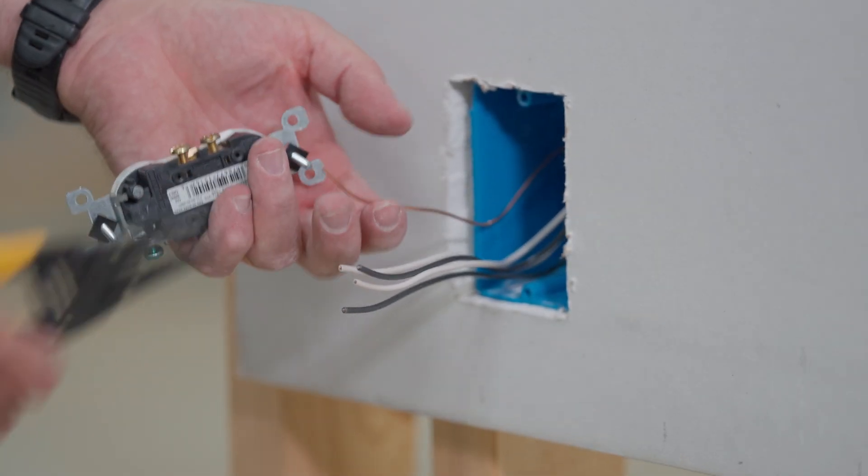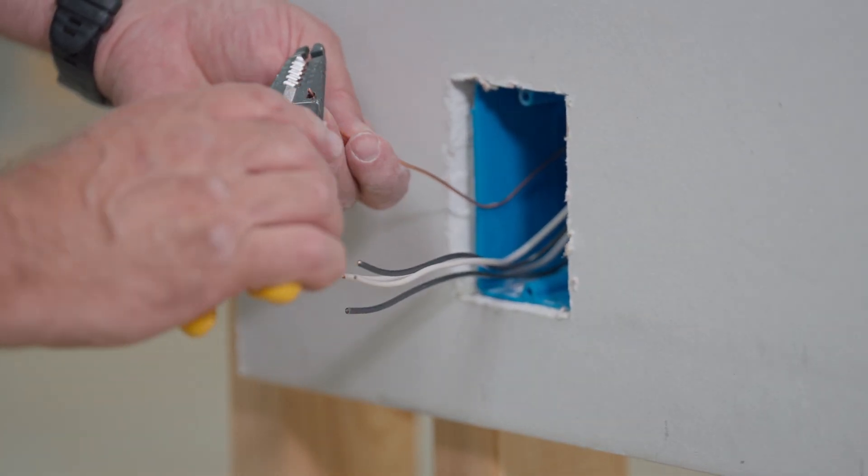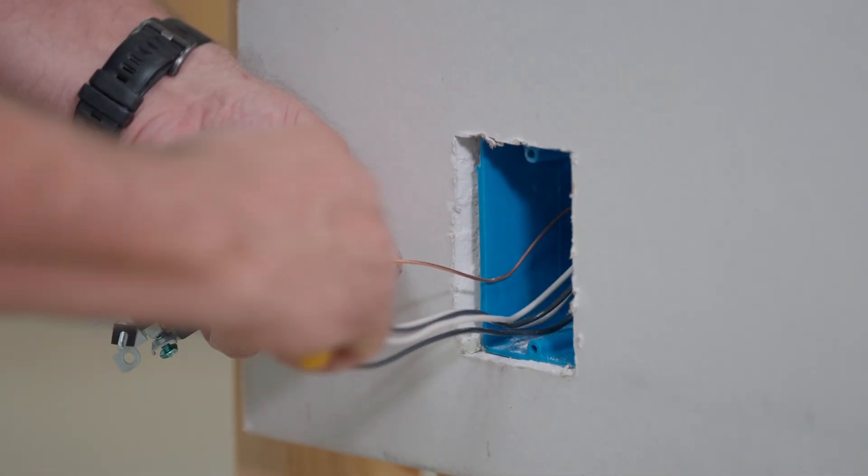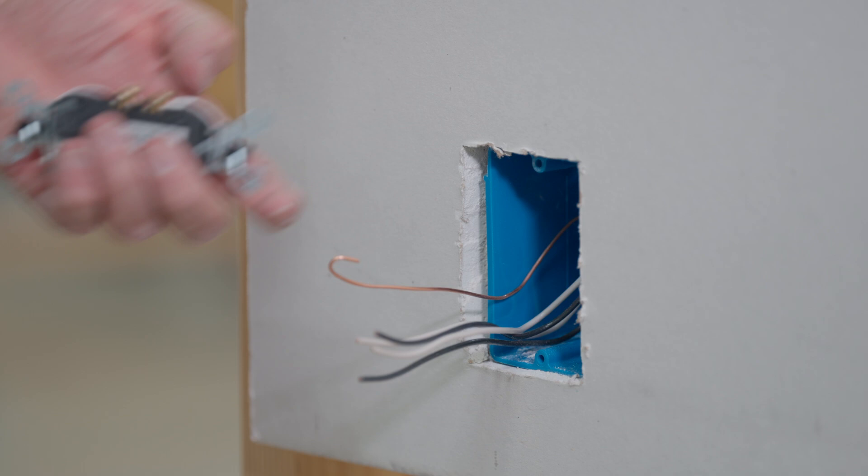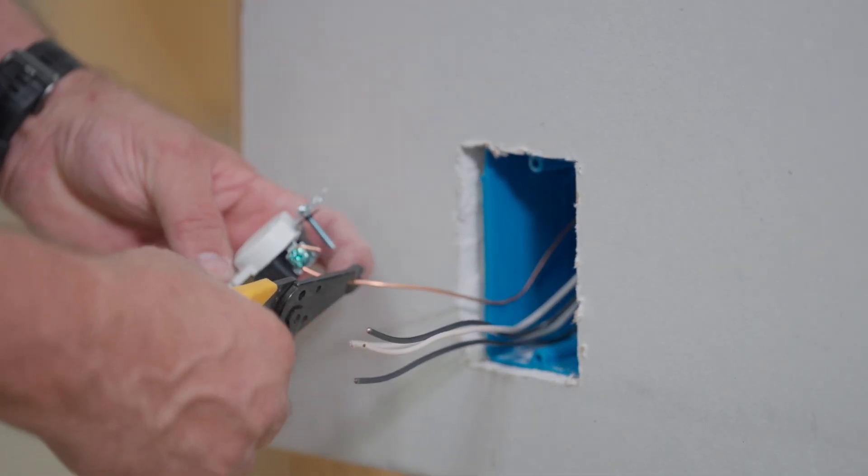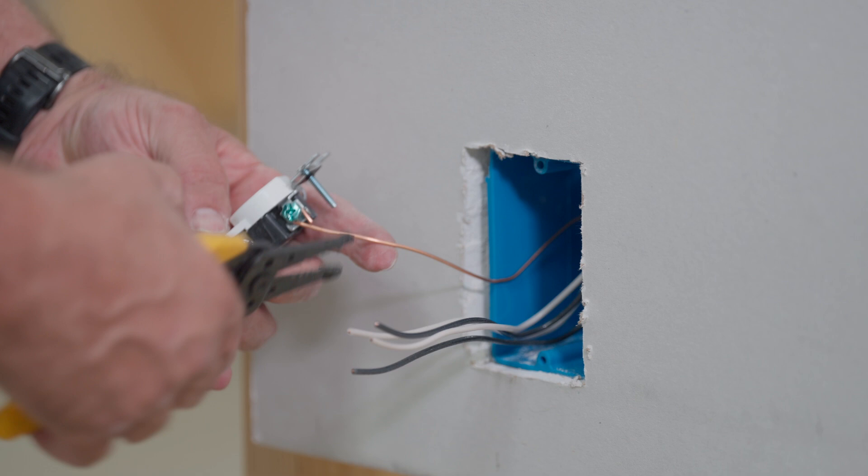And then of course, this is a ground wire that always has to be around the ground terminal. So we're going to take this little hole in the strippers and we're going to do this, just like that. And then we're going to get the ground terminal, just like that, and we're going to tighten it right on just like that.